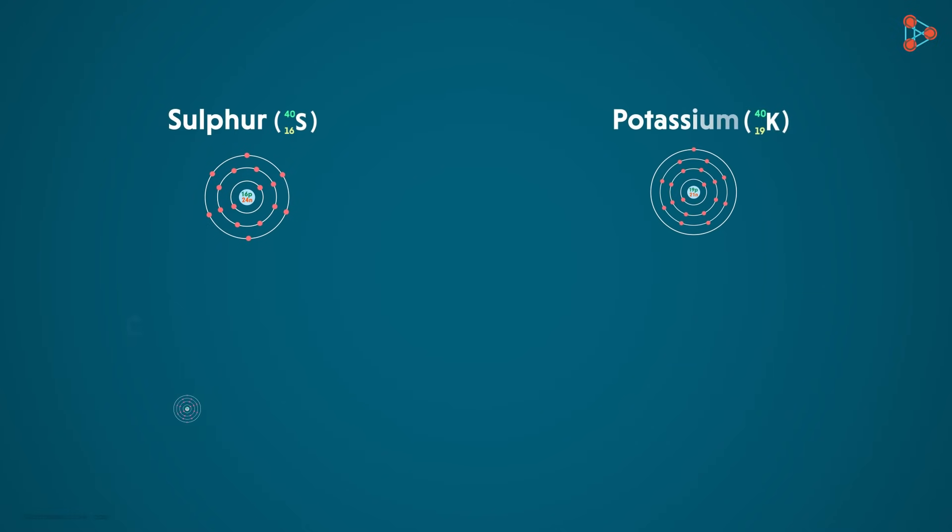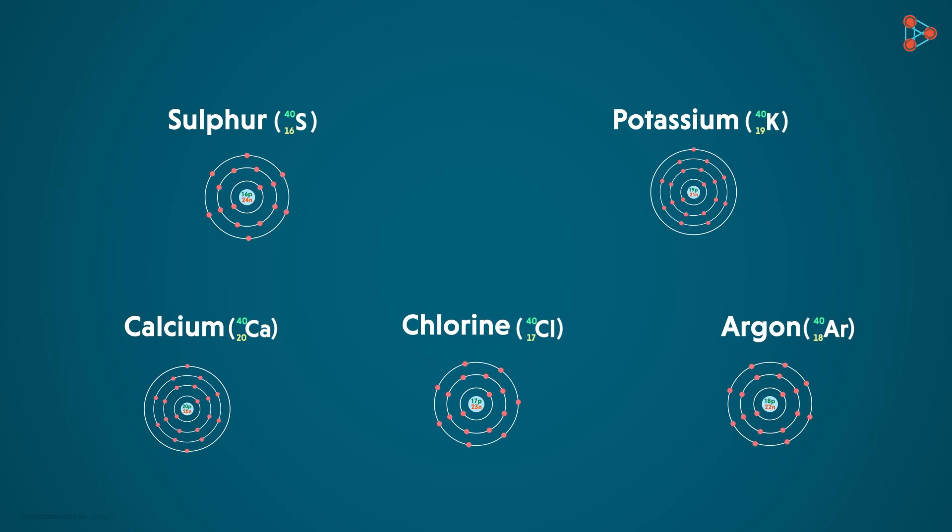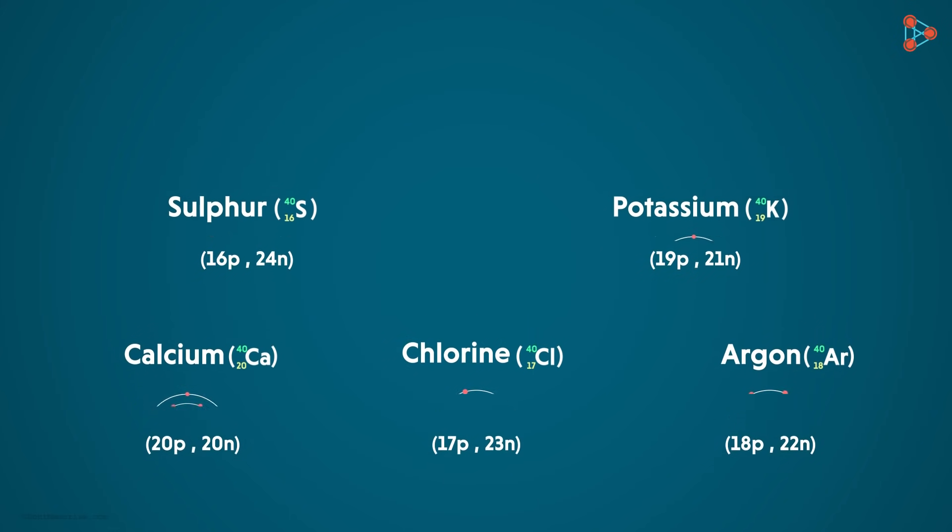We take 5 different elements: Sulphur, Potassium, Calcium, Chlorine and Argon. Now if you notice, in each case the number of protons and neutrons is different. It's 16 and 24 here, 19 and 21 here and so on. However, the total number of nucleons in each sums up to 40.